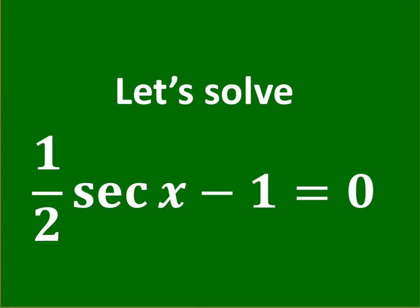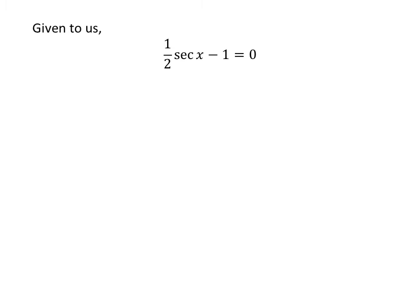In this video, we will learn to solve the equation: half of secant of x minus 1 is equal to 0. Given this equation, adding 1 to both sides gives us half of secant of x is equal to 1. Multiplying the whole equation by 2 gives us secant of x is equal to 2.